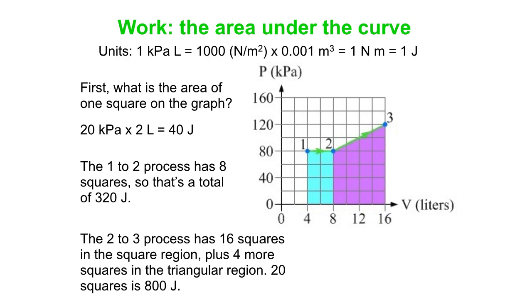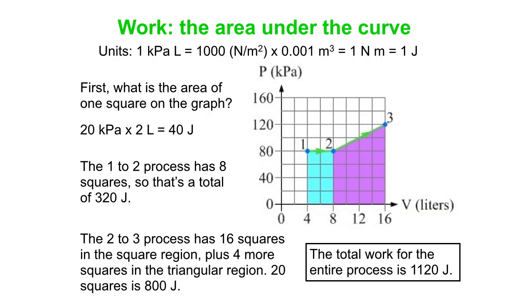So the total work is the sum of those two. It is 1,120 joules worth of work going from 1 to 2, and then 2 to 3, via that particular set of processes.